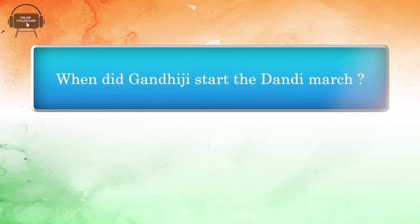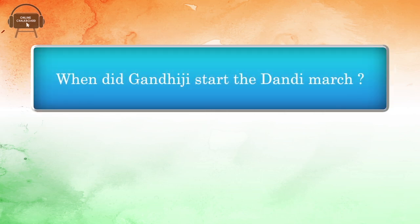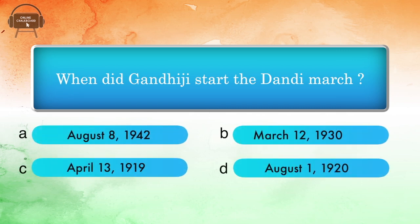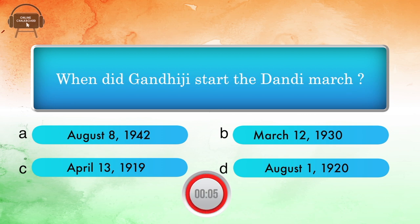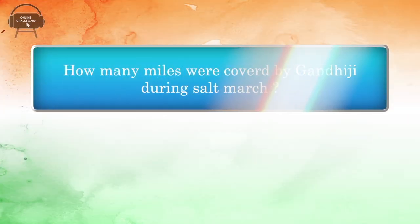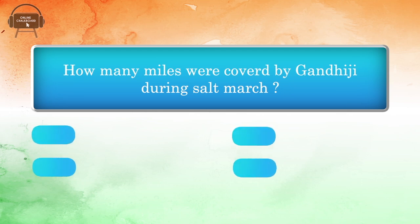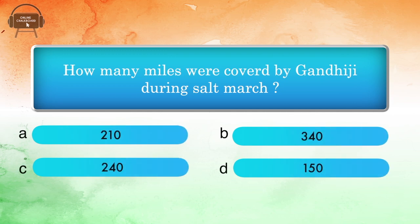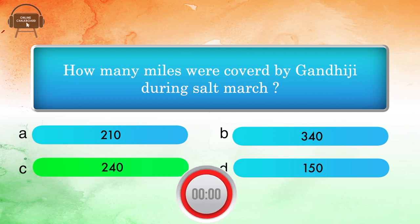First question: When did Gandhiji start the Dandi March? Options: 8th August 1942, 12th March 1930, 13th April 1919, 1st August 1920. Answer: 12th March 1930. How many miles were covered by Gandhiji during the Salt March? Options: 210, 340, 240, 150. Answer: 240.